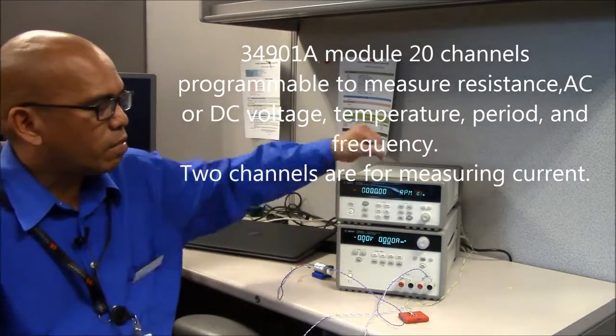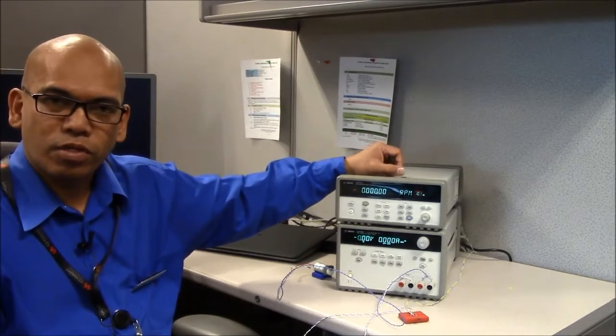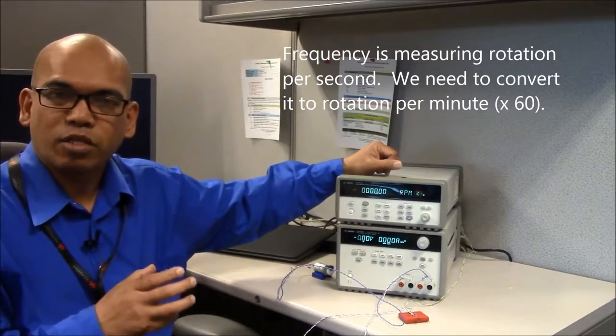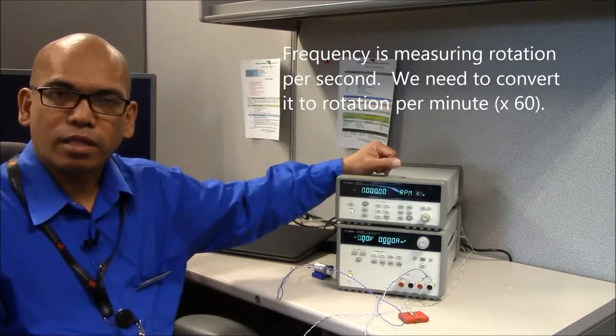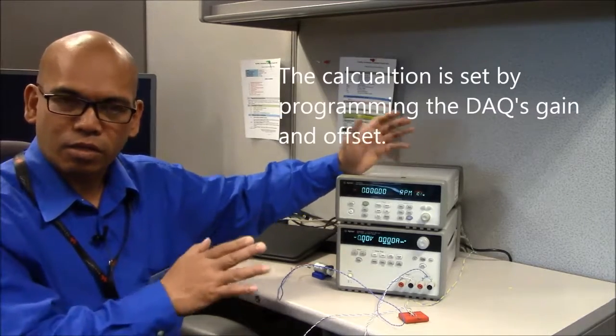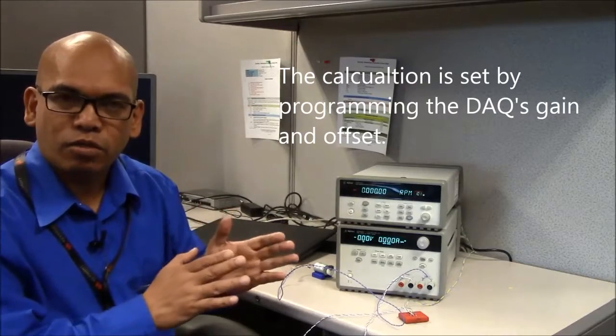In this demo, we're using the frequency and I'm going to program that to reflect RPM instead of cycles per second. To do that, we need to multiply the gain by 60 because that converts it from seconds to minutes.